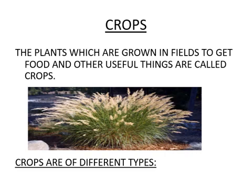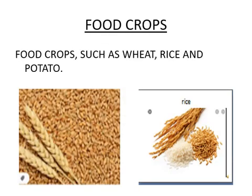The first type is food crops, the second is oil-producing crops, and the third is fiber crops. Food crops are whatever food we eat — chapatis, rice, vegetables, pulses. These crops are grown by farmers in their fields, then sold to wholesalers, then to shopkeepers, and we buy them from shopkeepers. Examples of food crops are wheat, rice, potato, etc.